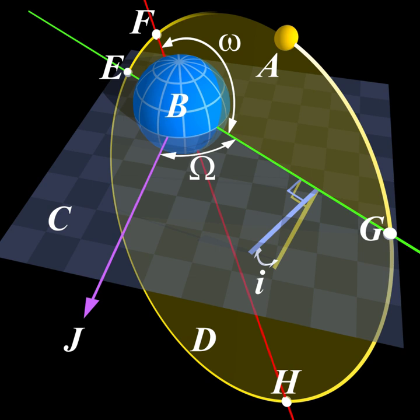Azimuth has also been more generally defined as a horizontal angle measured clockwise from any fixed reference plane or easily established base direction line. Today, the reference plane for an azimuth is typically true north, measured as a zero-degrees azimuth, though other angular units can be used.